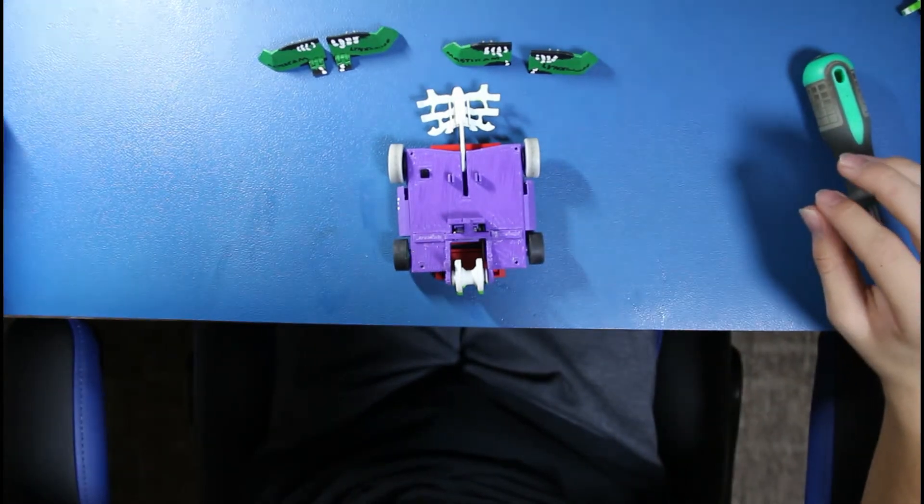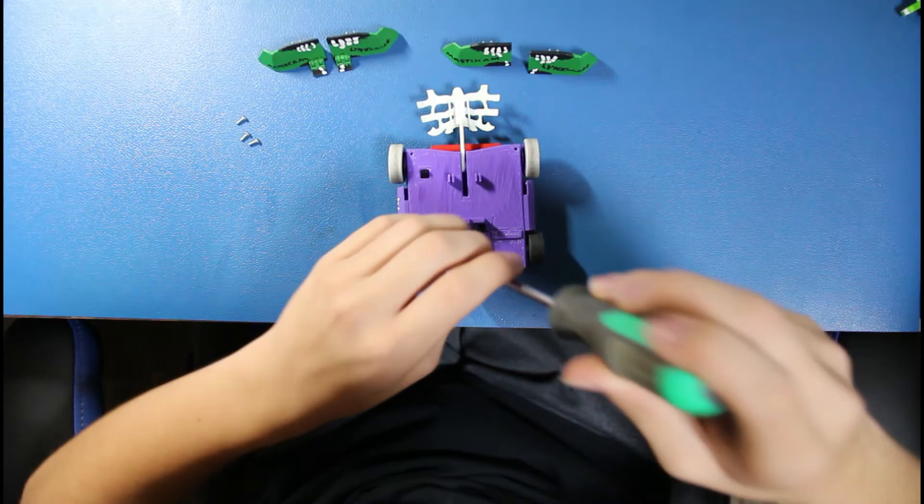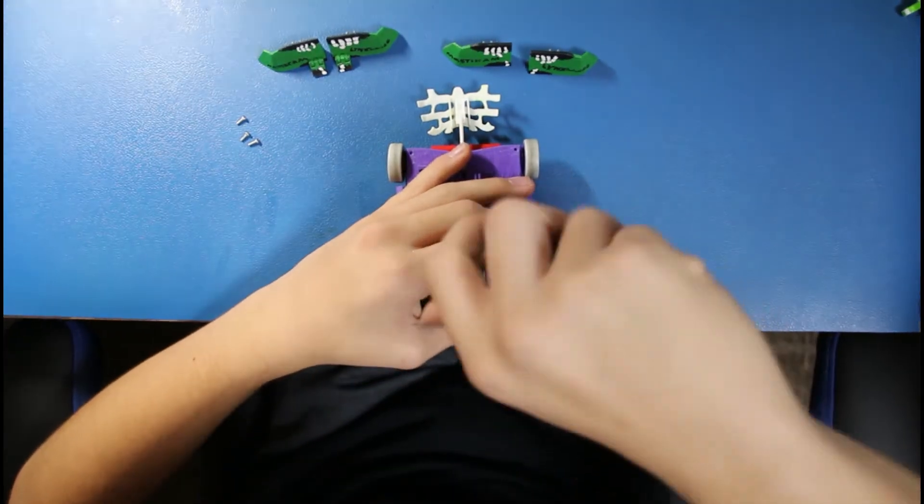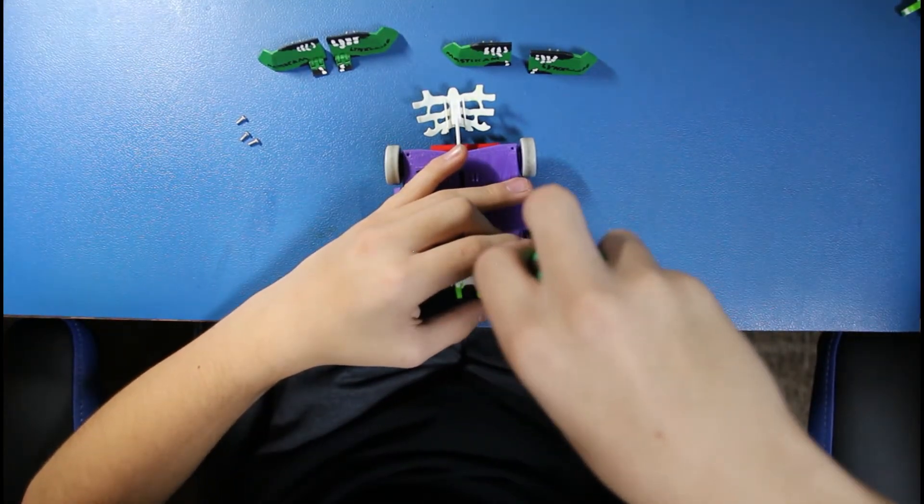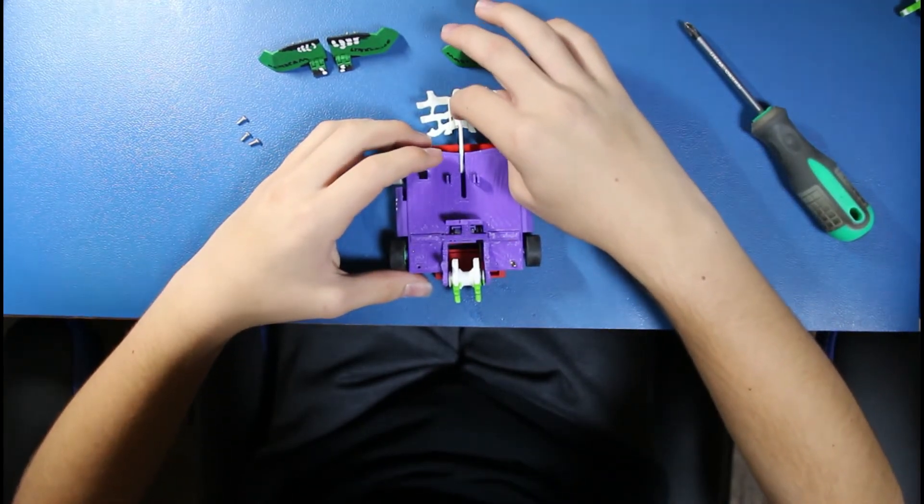Then you grab the four of the Witch Doctor V2 screws. Now, you screw it all in. This will get you to the point where you have just a stick poking out of the slot.